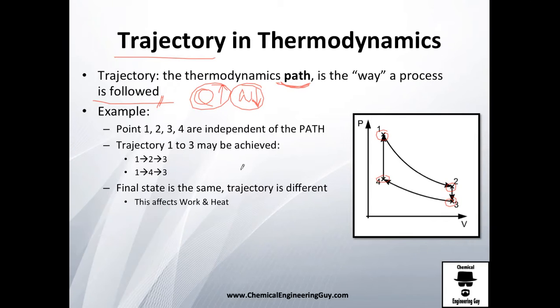They have, of course, independent paths. Let me show you that I could achieve one to three in two types of ways: either I go one-two-three, or I go one-four-three. Look, I always start from one and finish in three, but the path is totally different.